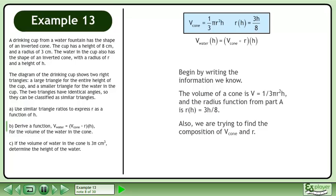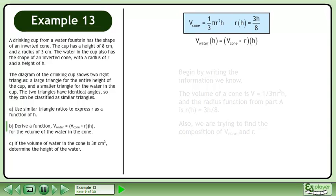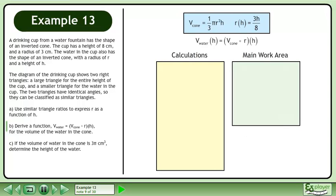Also, we are trying to find the composition of the volume of the cone and the radius. Set up the workspace. Rewrite the composition using regular function notation. Replace r with 3h over 8.